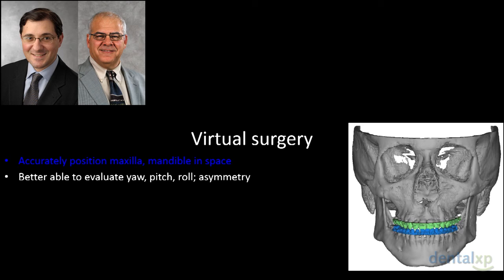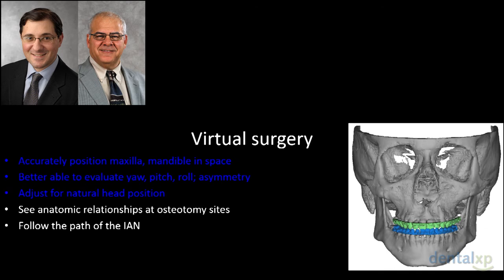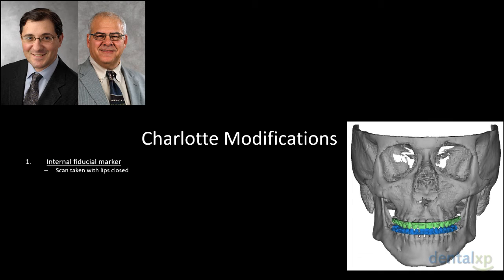We can accurately position the maxilla and mandible. If there's an asymmetry during virtual prep, we can turn the skull over and look at the skull base — you can always see asymmetries there. We can evaluate yaw, pitch, and roll, and adjust for natural head position. See anatomic relationships: where the nerve is — low nerve, high nerve, lingual nerve, facial nerve position — to increase safety in our osteotomies. When I was in Charlotte, my group — Myron Tucker, Brian Farrell, and myself — collaborated together and enhanced what Jamie Catano in Houston really started. We took everything external with goniometers going through the lips and brought them all inside, making it much easier. That's actually published by Brian Farrell.